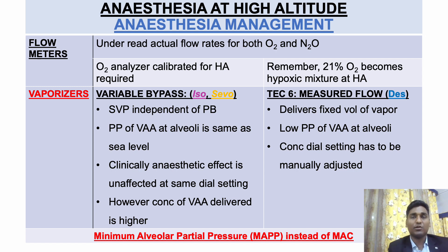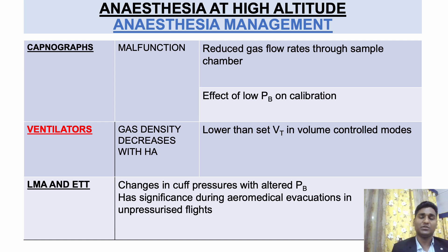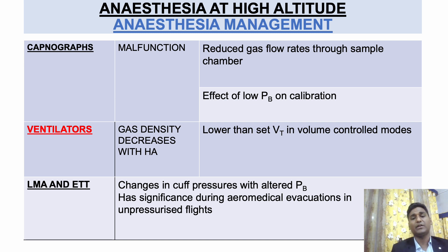For desflurane, however — which I do not use at this altitude — it delivers a fixed volume of vapor, so lower partial pressure is delivered at altitude and the concentration dial must be manually adjusted. The concept of MAC changes at higher altitudes: it is minimum alveolar partial pressure rather than minimum alveolar concentration. Capnographs malfunction at higher altitude mainly due to low barometric pressure effects on calibration and reduced gas flow through the sampling chamber — always get an ABG to know baseline CO2. Ventilators in volume control mode deliver lower tidal volumes due to decreased gas density.